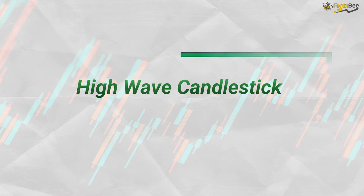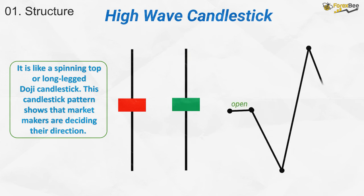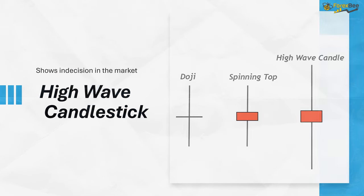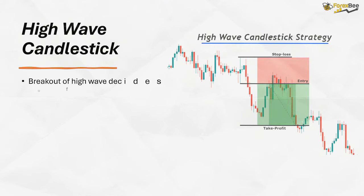Up next, let's discuss the high wave candlestick pattern. This pattern resembles a spinning top or long-legged doji with long upper and lower wicks and a small real body. The long wicks indicate significant price fluctuations, but the small body shows indecision as neither buyers nor sellers are in clear control. The high wave pattern typically forms at key support or resistance levels, signaling market indecision. In this example, after the formation of the high wave pattern, a breakout occurs in the bearish direction, confirming that sellers have gained dominance.